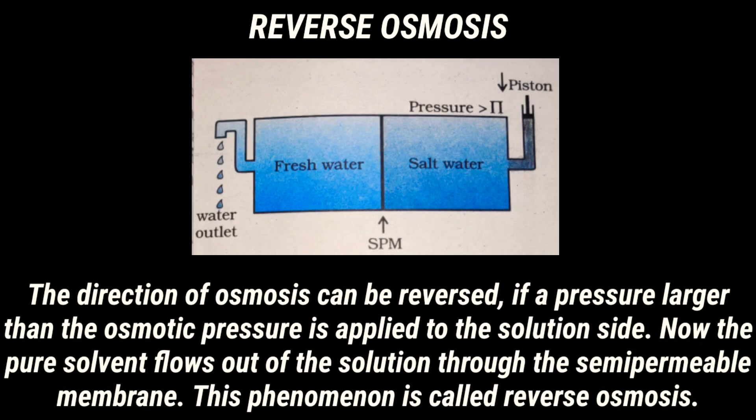Reverse osmosis: the direction of osmosis can be reversed if a pressure larger than the osmotic pressure is applied to the solution side. The pure solvent then flows out of the solution through the semi-permeable membrane. This phenomenon is called reverse osmosis.